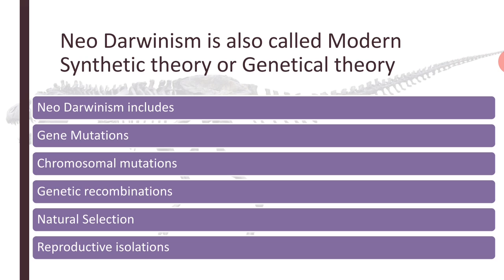If any mutation takes place in more than one nucleotide, it is called a gross mutation. Point mutation is a term applicable to the change in one nucleotide, whereas if the change occurs in more than one nucleotide, it is called a gross mutation. Gene mutations, which are also point mutations, bring changes in both the phenotype and the genotype of an individual. There are various types of gene mutations, such as frame shift mutations, which will be covered in the next lesson.